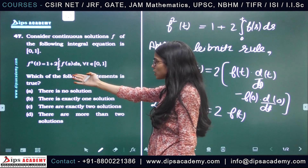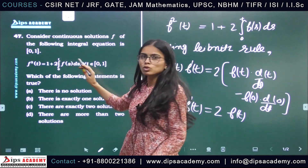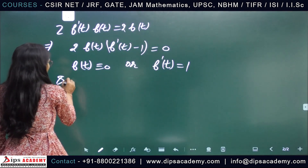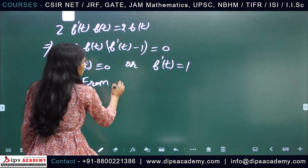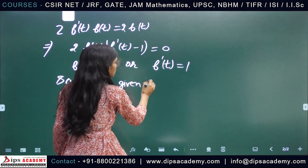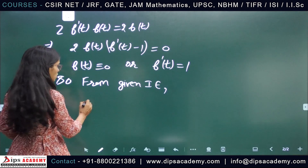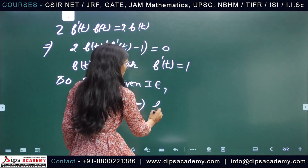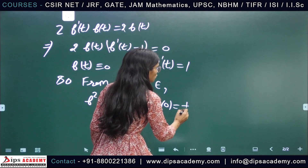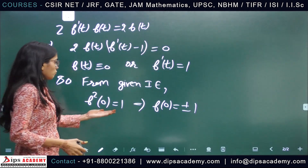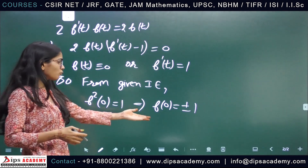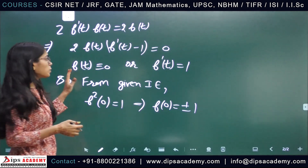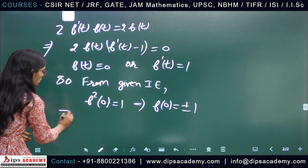From the original integral equation, f²(0) equals 1, since the integration from 0 to 0 is 0. So f²(0) = 1, which implies f(0) = +1 or f(0) = −1. This means f(t) cannot be identically 0, because at t = 0 we get a non-zero value. So we must take the second choice: f'(t) = 1.